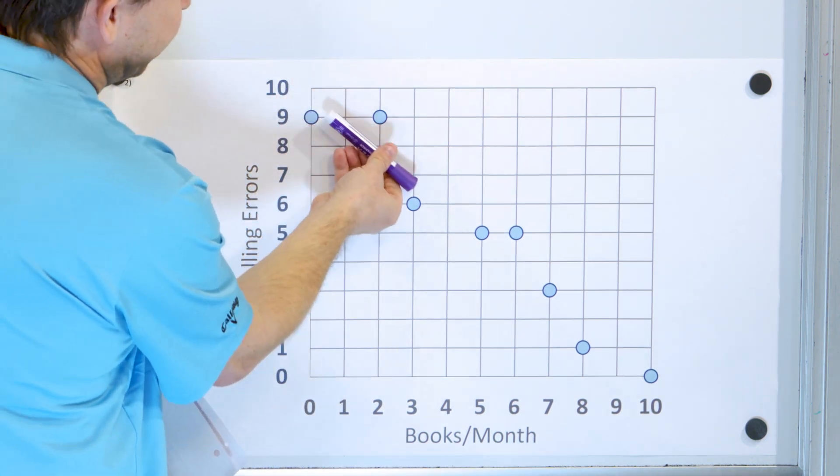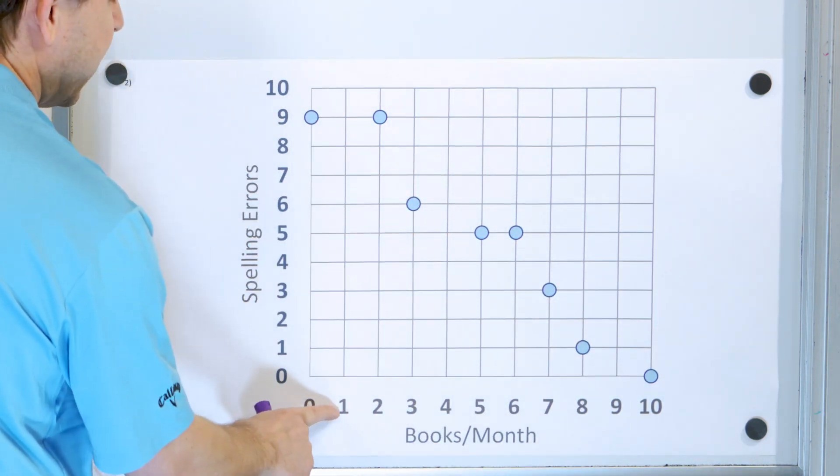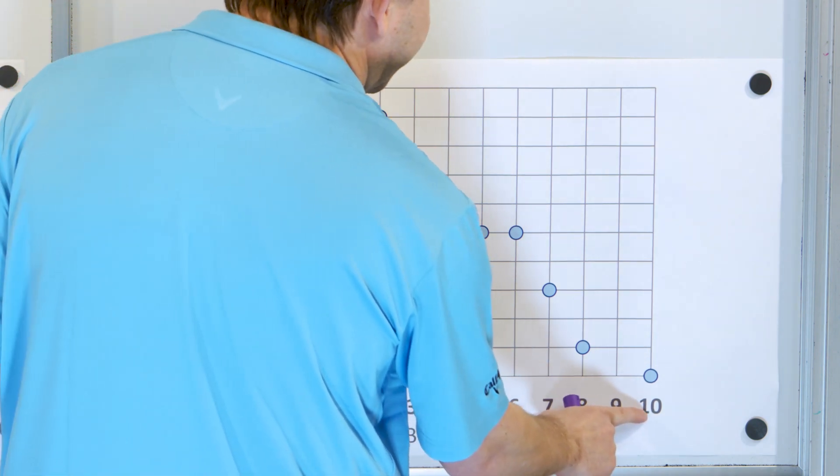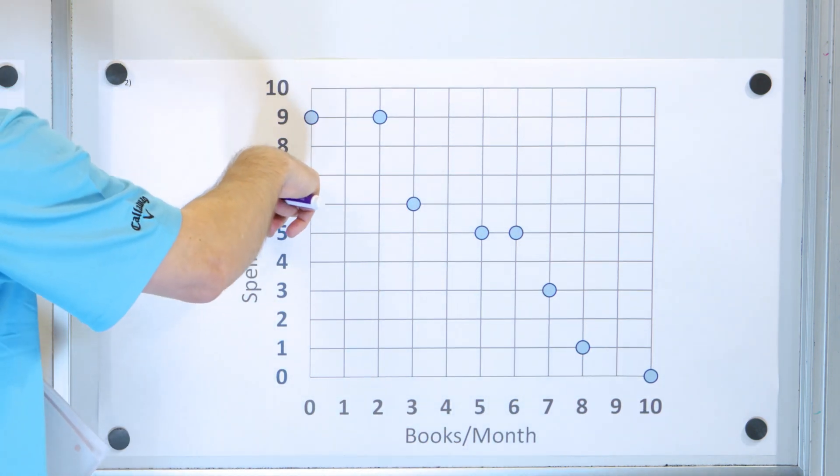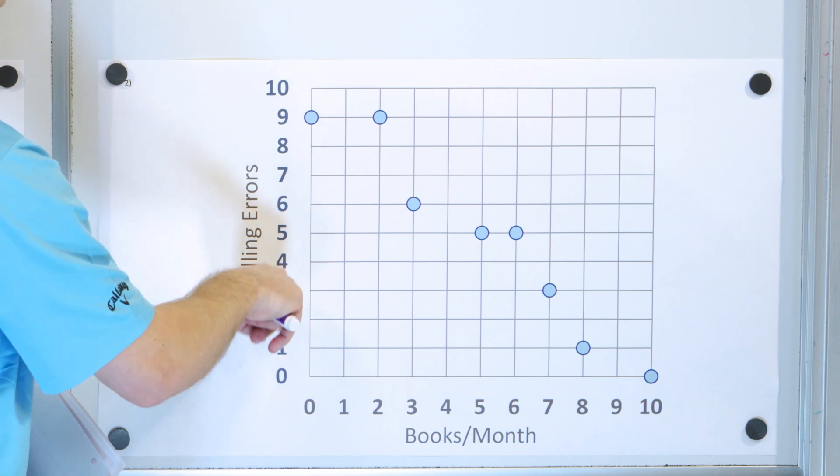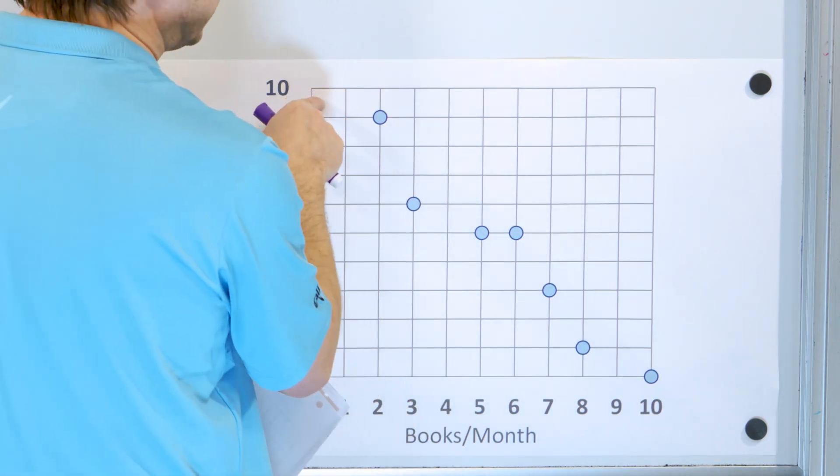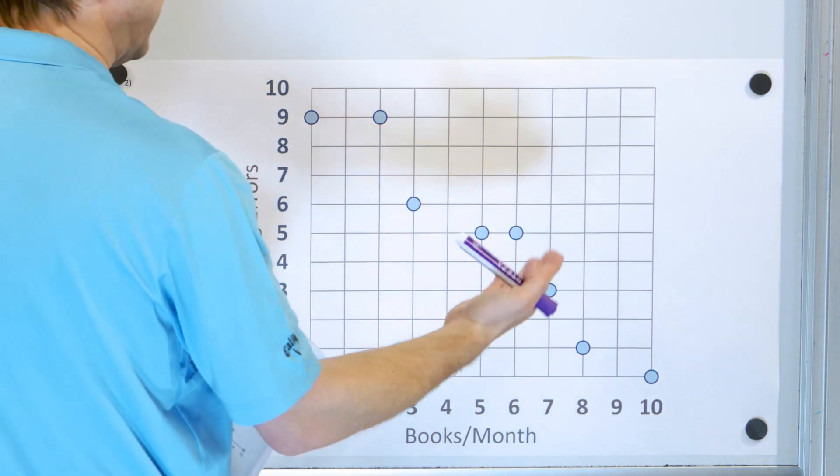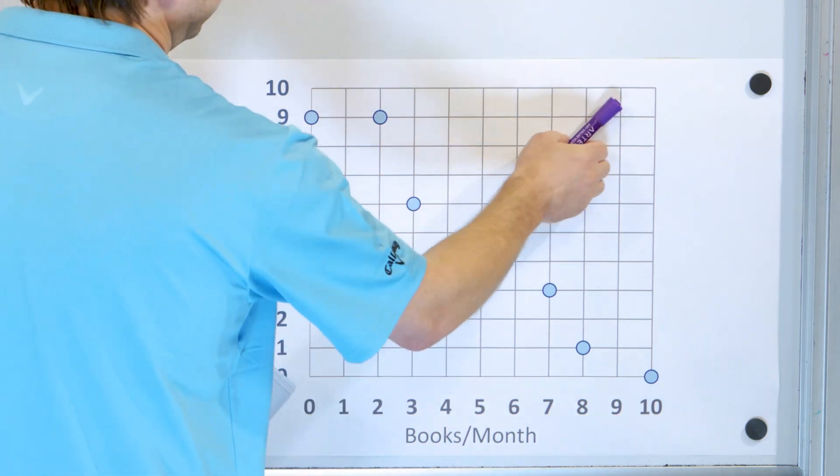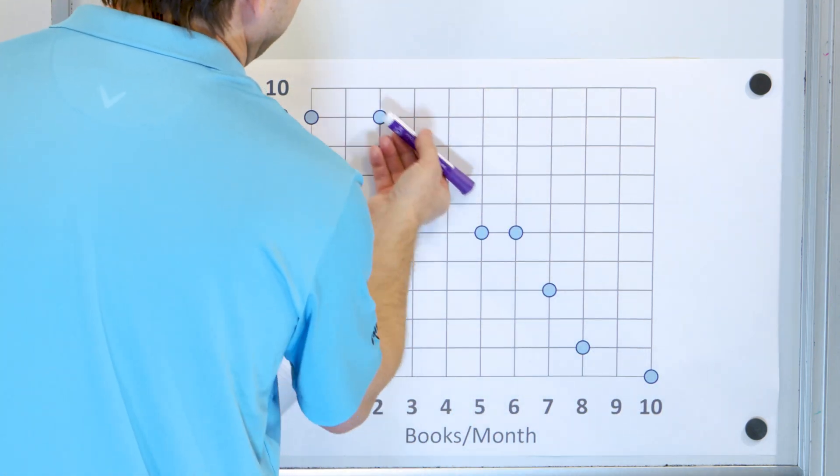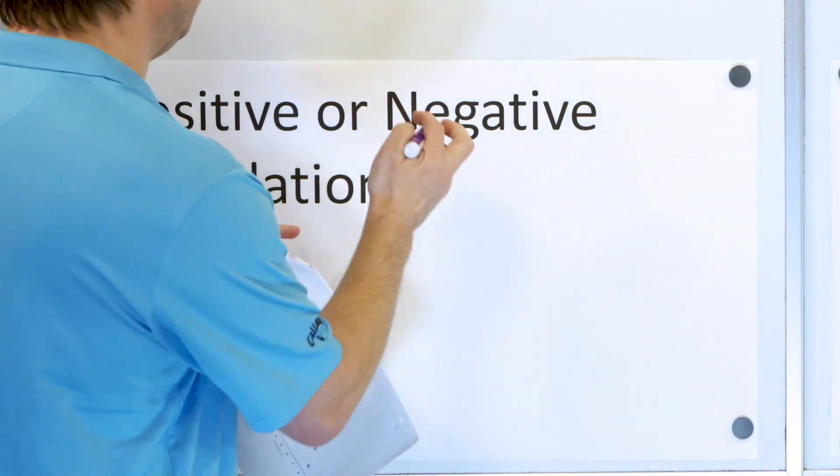It looks like there's a pretty clean trend down, where the number of books that someone reads per month increases, and the number of spelling errors that they have per paper decreases. So it looks like there's a pretty strong correlation. Is it positive or negative? Positive correlation goes up like this, and negative correlation goes down like this. So this is negative correlation.